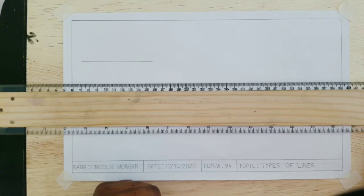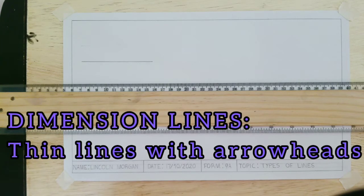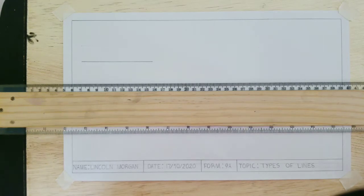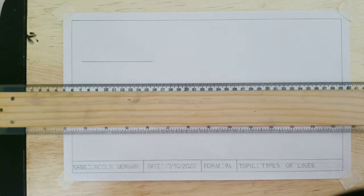The next line is called dimension lines. Dimension lines are lines that are drawn very thin and also consist of arrowheads at both ends. They are used to show various measurements of an object. Again, they are thin lines with arrowheads at both ends. I will now demonstrate how to draw a dimension line.